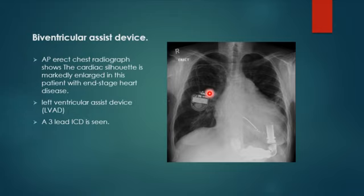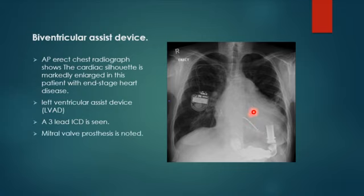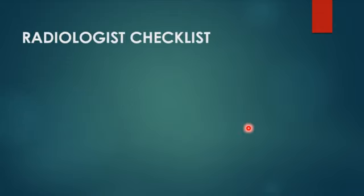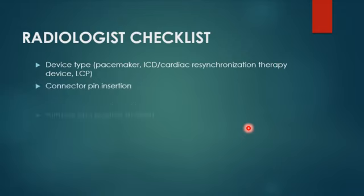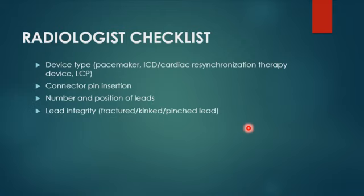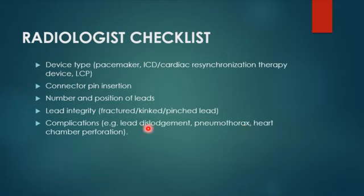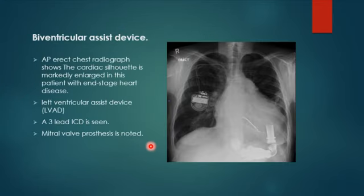This patient also has a cardiac device with three leads, and from the thick radiopaque shock coil you can identify it as a defibrillator. This patient also has a prosthetic valve. When you see a patient from the ICU with cardiac devices, make sure you know the type, the tip position of each lead, the number and position of each lead, and the lead integrity — ensuring there is no fracture, discontinuity, kinking, or pinching. Also look for complications such as dislodgement, pneumothorax, or cardiac chamber perforation — if leads are overlying the lung tissue rather than inside the heart, suspect perforation.